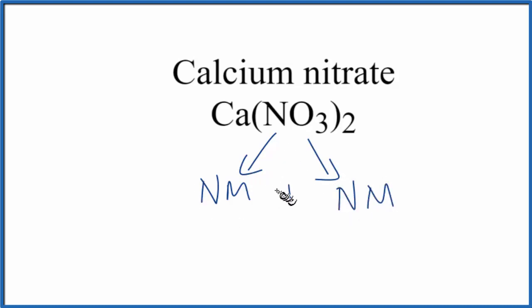So we have a nonmetal plus a nonmetal. That gives us a covalent compound, also called a molecular compound.